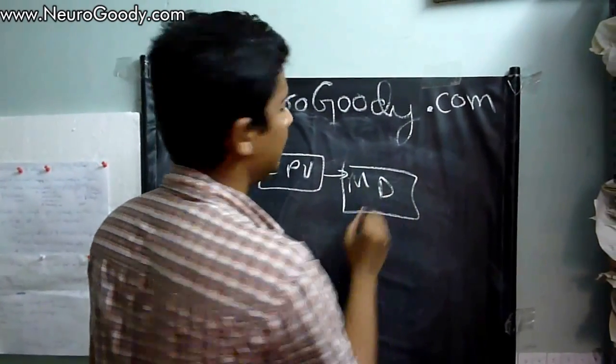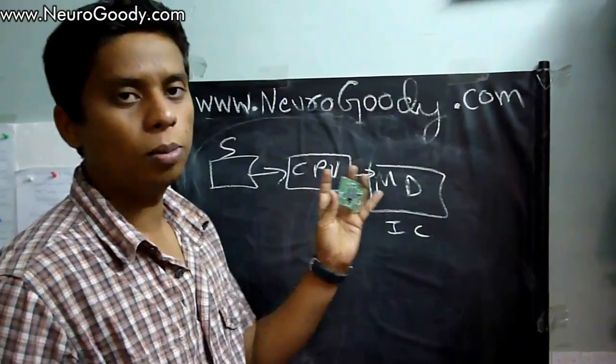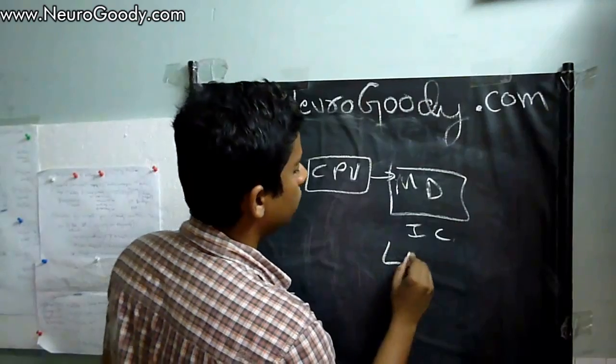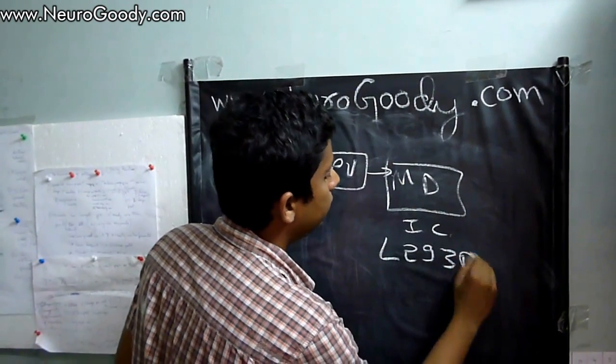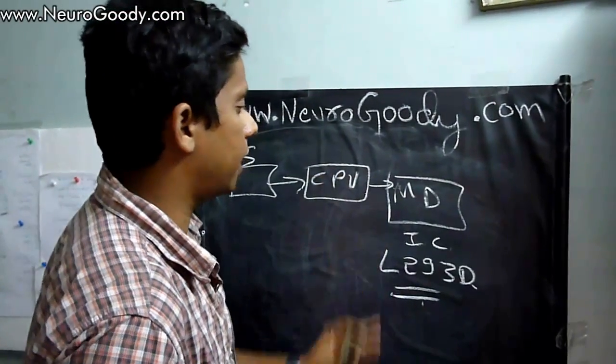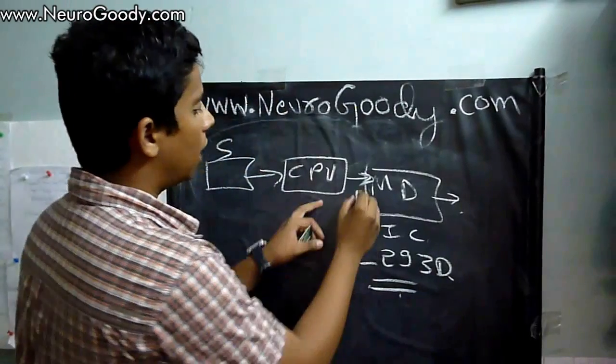You connect the output from your CPU to your motor driver IC. Standard motor driver IC for a hobby robot maker will be the L293D IC. This is a standard and very low cost motor driver IC which will give you reliable motor outputs.